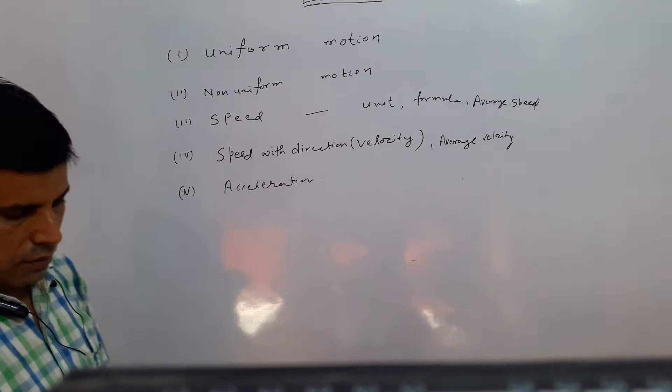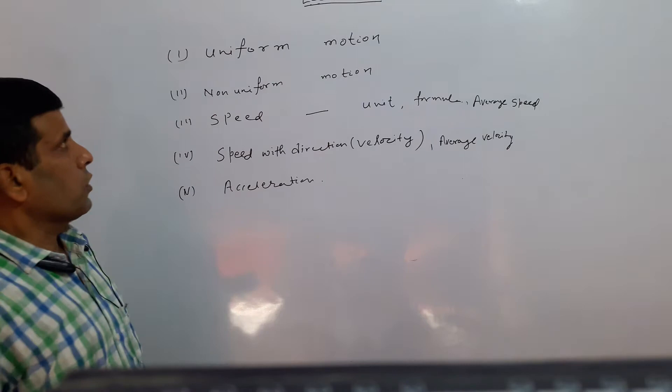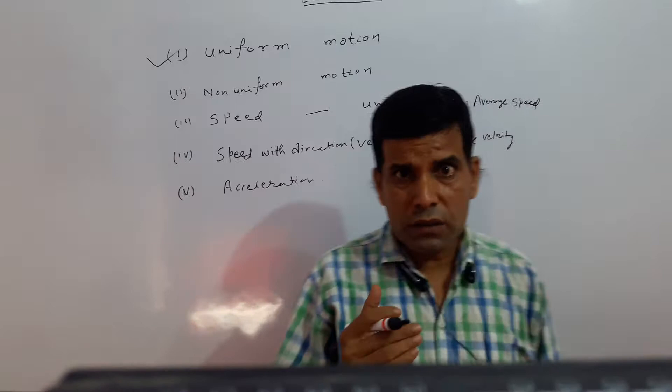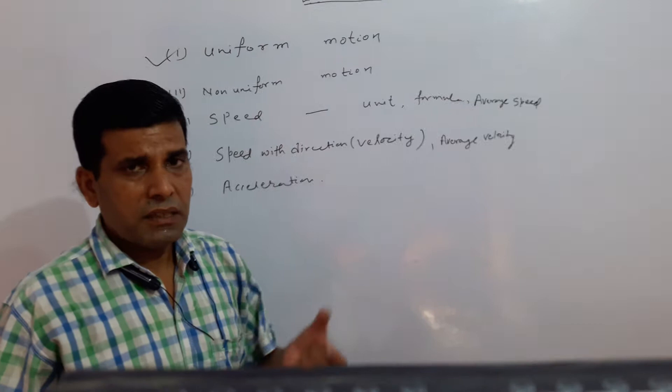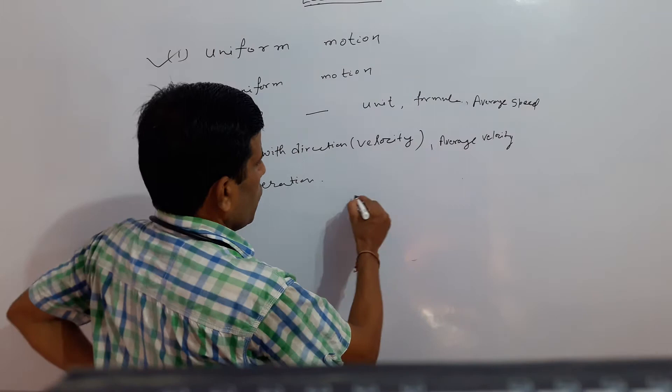First of all, let's clear your concept about uniform motion. By the name it is clear. Uniform means — what do you understand? If any object travels a distance equal in equal intervals — what do you understand by that?